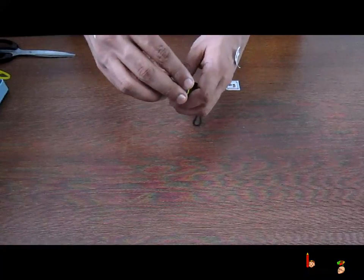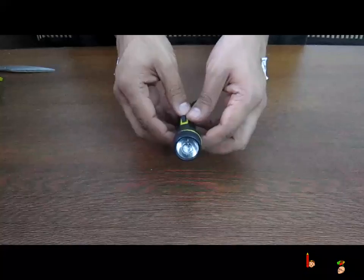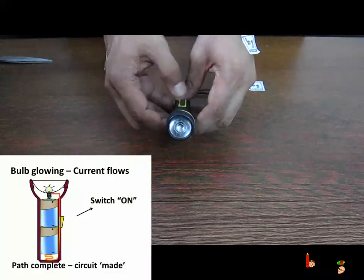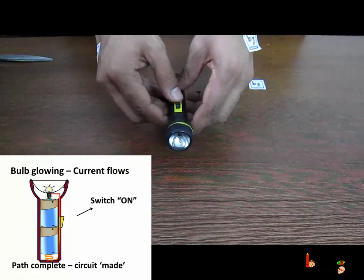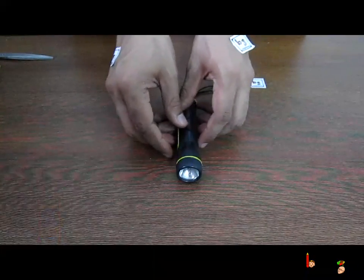Now close the bulb, tighten it a bit. Let's turn on the switch. Hooray, the bulb is glowing! I can turn off the switch to turn off the bulb. I can turn it back again. Cool, isn't it?